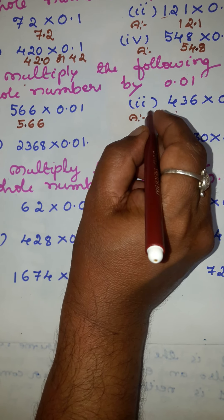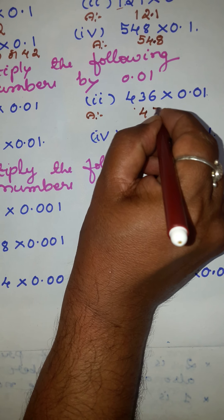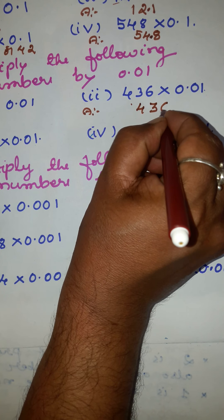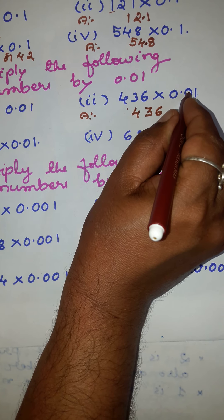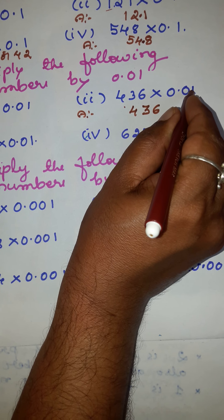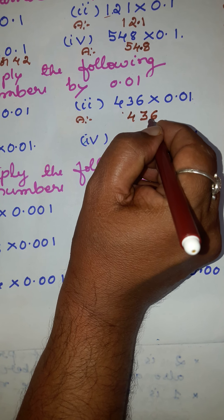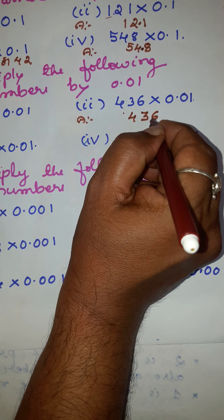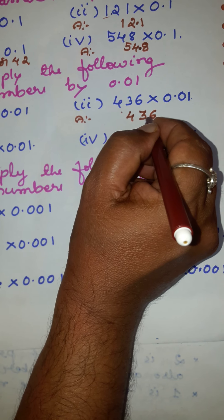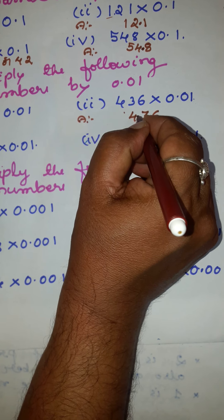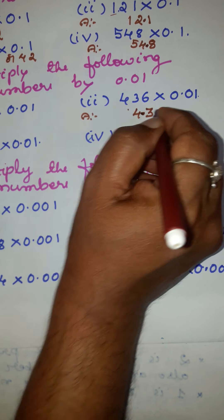Second example: write this number 436 as it is. After the decimal to the right there are two places, so we have to move two places from right to left — one, two — and put the point here. 4.36 is the answer.